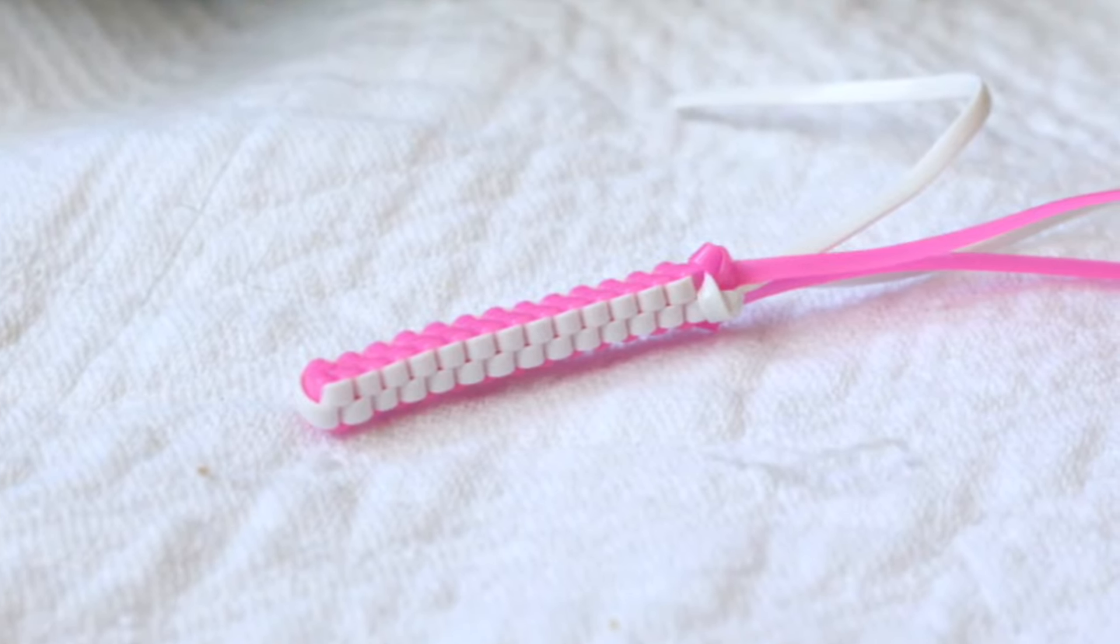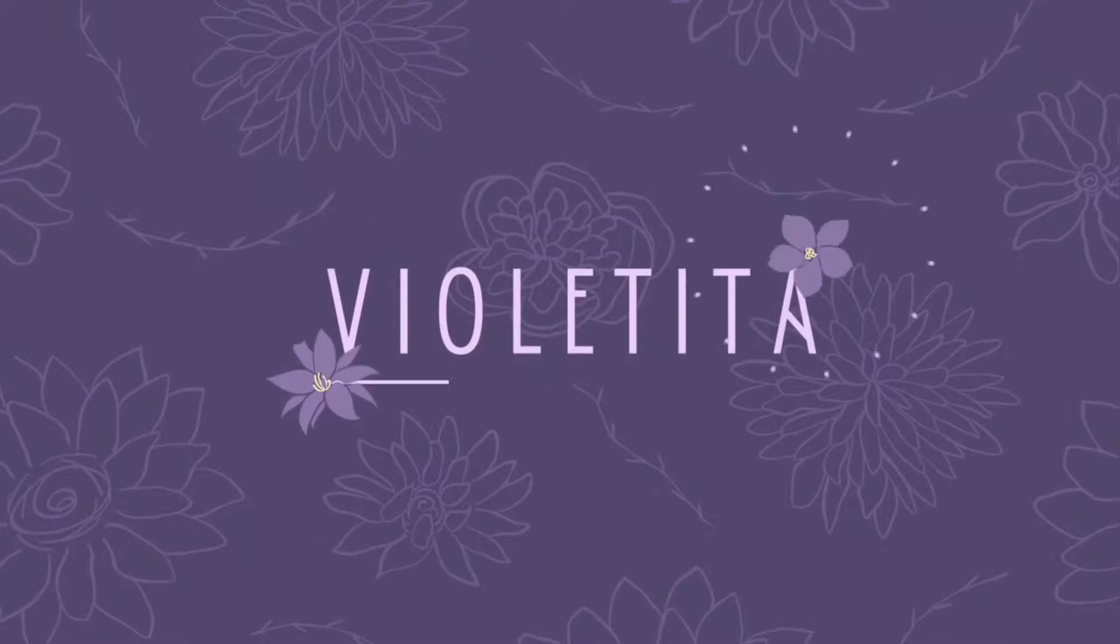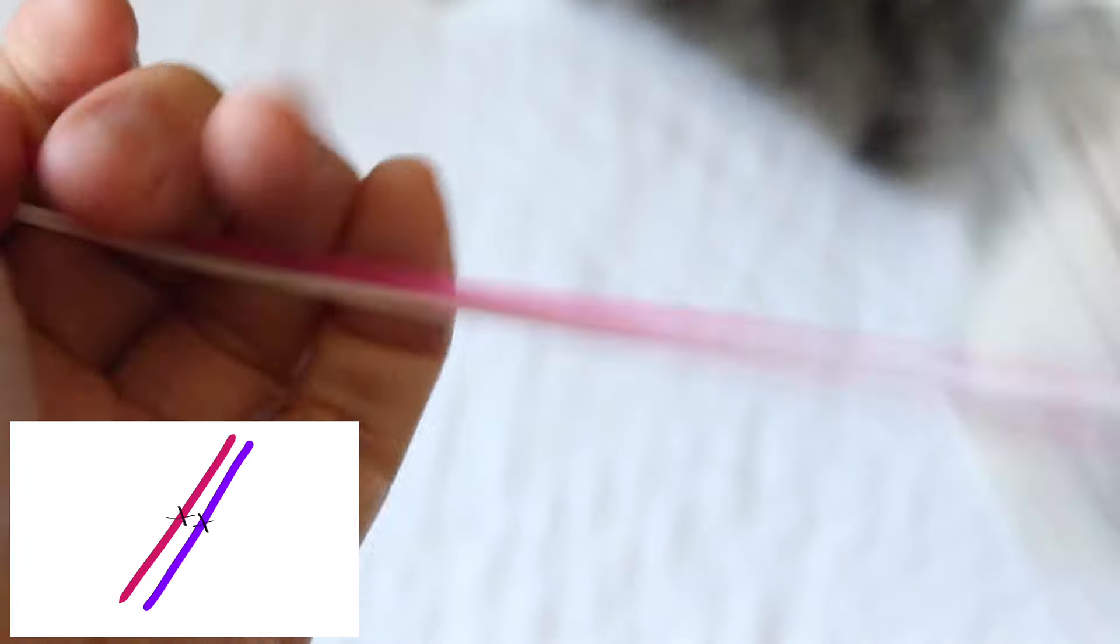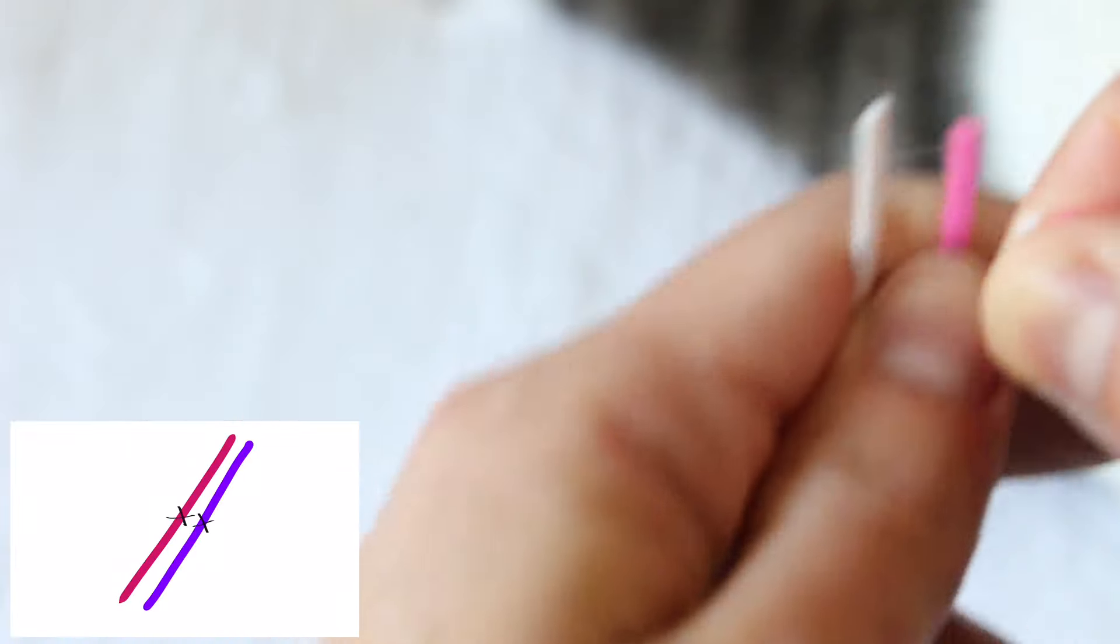This is how you do the box stitch. Okay, so I'm taking two of my favorite pieces of string that I've cut to be the same length, and I'm grabbing them at all four ends and taking them so they meet in the middle like this.